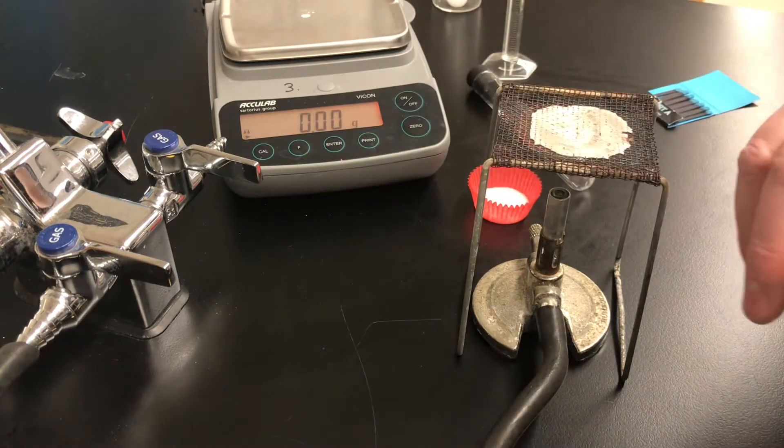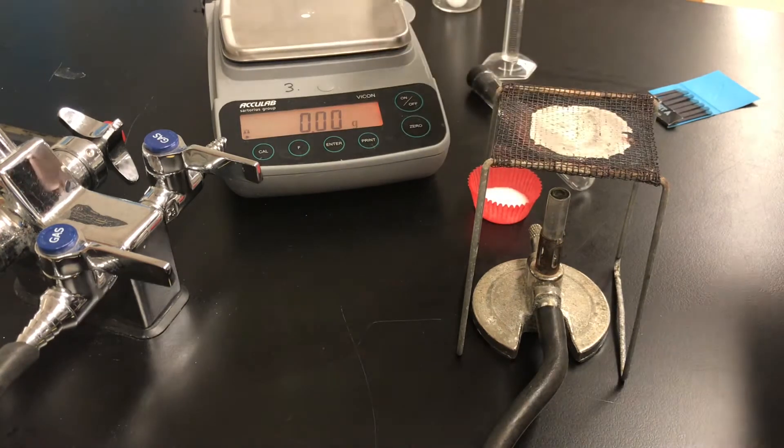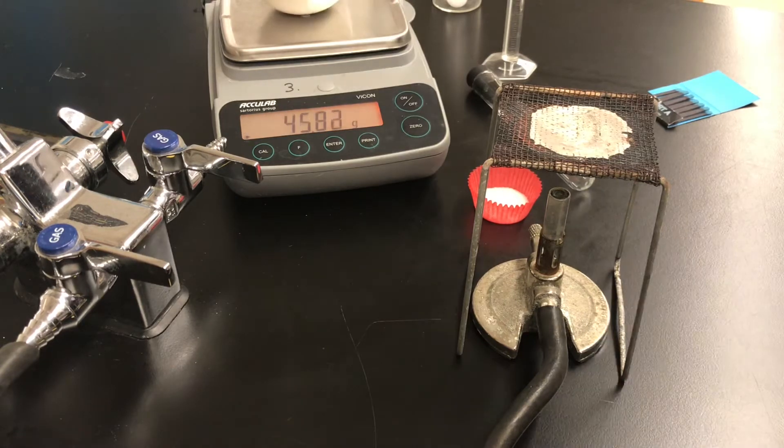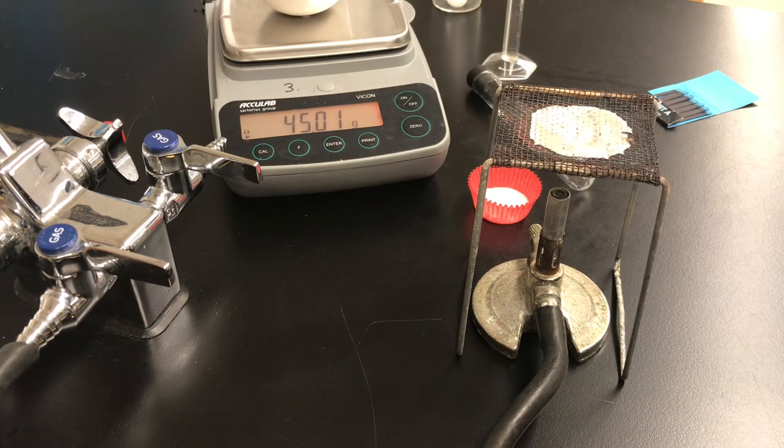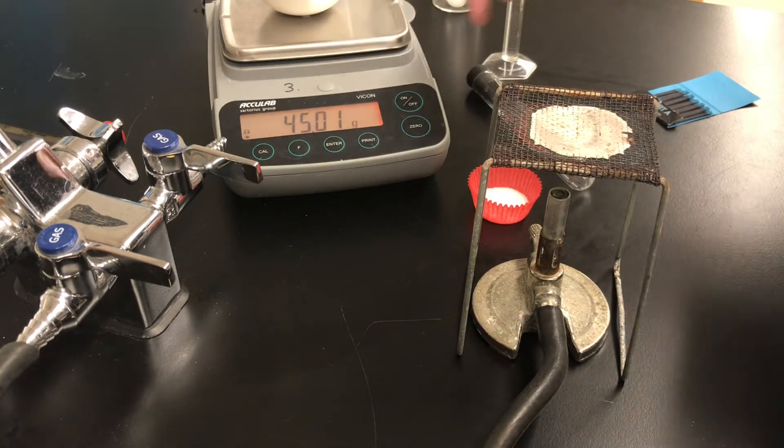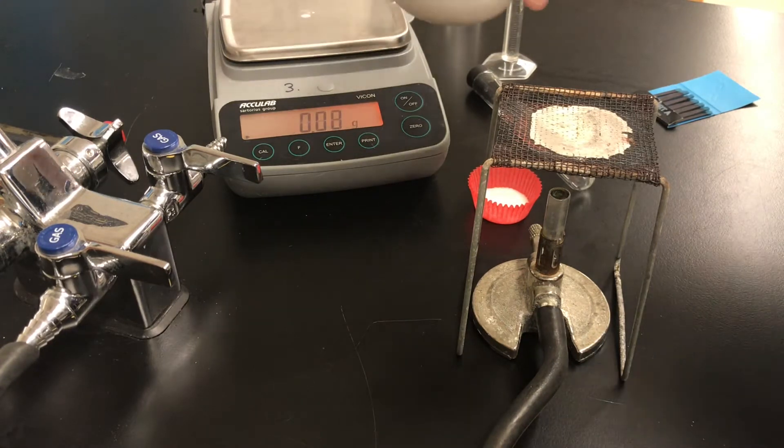Let's begin by recording the mass of our empty evaporating dish. If you have your own data table in your booklet you can record the mass of the empty evaporating dish, 45.01 grams. This is a centigram balance. The last two digits are decimals, so 45.01 grams.